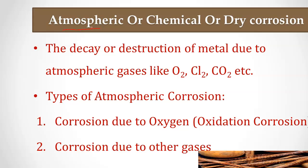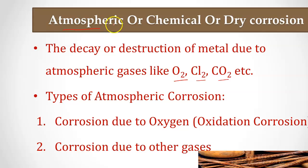In the atmosphere, various gases are present like oxygen, chlorine, carbon dioxide, and nitrogen. Because of these atmospheric gases, the corrosion which occurs is called atmospheric corrosion. The decay or destruction of metal caused by atmospheric gases like oxygen, chlorine, and carbon dioxide is called atmospheric corrosion, chemical corrosion, or dry corrosion.